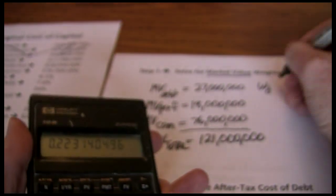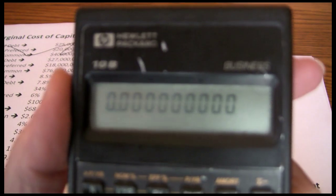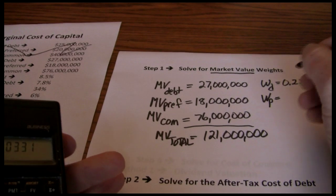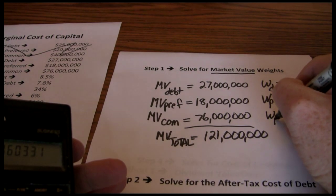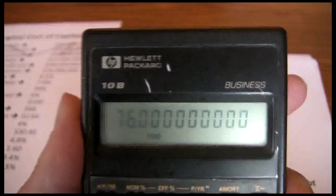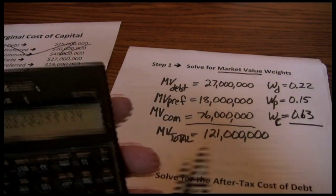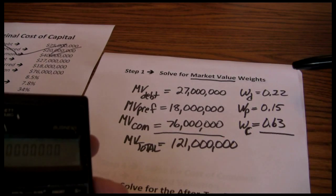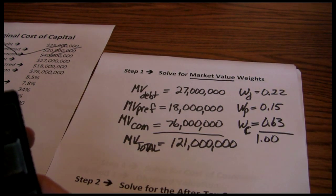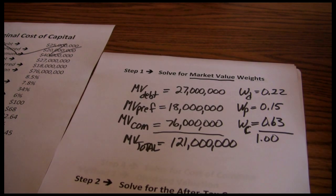The weight of debt is the $27 million divided by $121 million, giving us a weight of 0.22. Just carry this out to two decimal places for the weight. The weight of preferred is $18 million divided by $121 million, giving us 0.15. The weight of common is $76 million divided by $121 million, giving us 0.63. Note that your weights should add up to 1: 0.22 plus 0.15 plus 0.63 equals 1. If you get 0.99 or 1.01, don't worry — it's just a rounding error. But if you get something significantly different from 1, double-check your calculations.